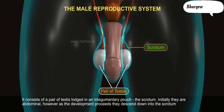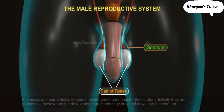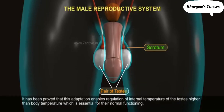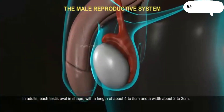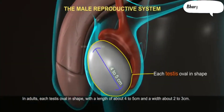Initially the testes are abdominal. However, as development proceeds, they descend down into the scrotum. It has been proved that this adaptation enables regulation of internal temperature of the testes, which is essential for their normal functioning. In adults, each testis is oval in shape, with a length of about 4 to 5 cm and a width of about 2 to 3 cm.